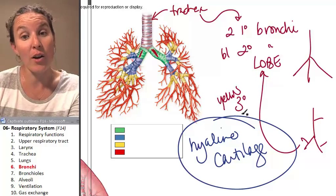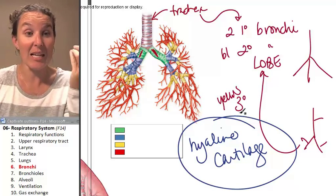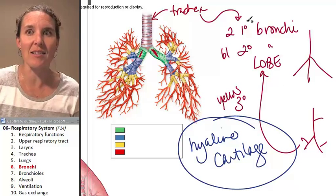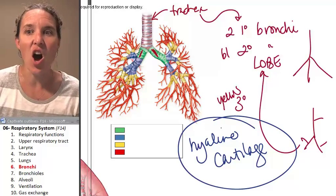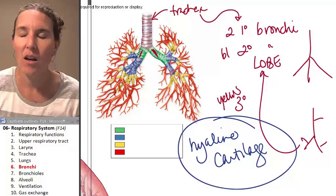Whether it be a primary, a secondary, or a tertiary, it is a bronchus. Because the next thing that we're going to talk about does not have cartilage.